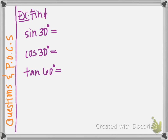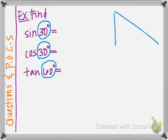For this example, we need to find the sine of 30 degrees, the cosine of 30 degrees, and the tangent of 60 degrees. Instead of angle names like A or B, we have actual angle measures. We don't have a picture, so we need to think about what we've learned. We've already learned about triangles with acute angles of 30 and 60 with a right angle. These trig ratios only work with right triangles, so if one acute angle is 30, the other is 60. Let's sketch a 30-60-90 triangle.